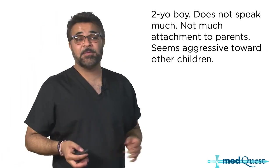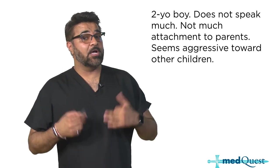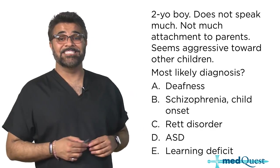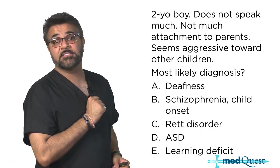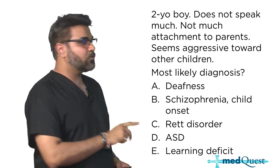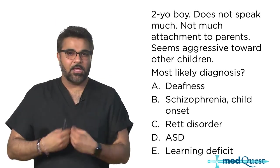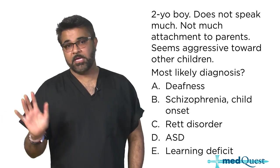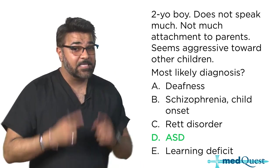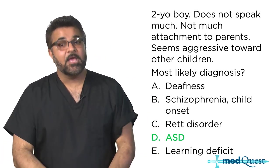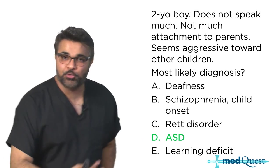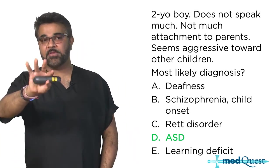A two-year-old boy who does not speak much and doesn't have much attachment to his parents, who even seems aggressive towards other children - the most likely diagnosis is autism spectrum disorder. Notice how they don't give you a lot of clues, but the lack of attachment to the parents is a giveaway for autism spectrum disorders. They didn't say anything about eye contact or repetitive movement - those buzzwords don't always show up. They'll describe the relationship to the parents, and you have to infer that this child has very little attachment.